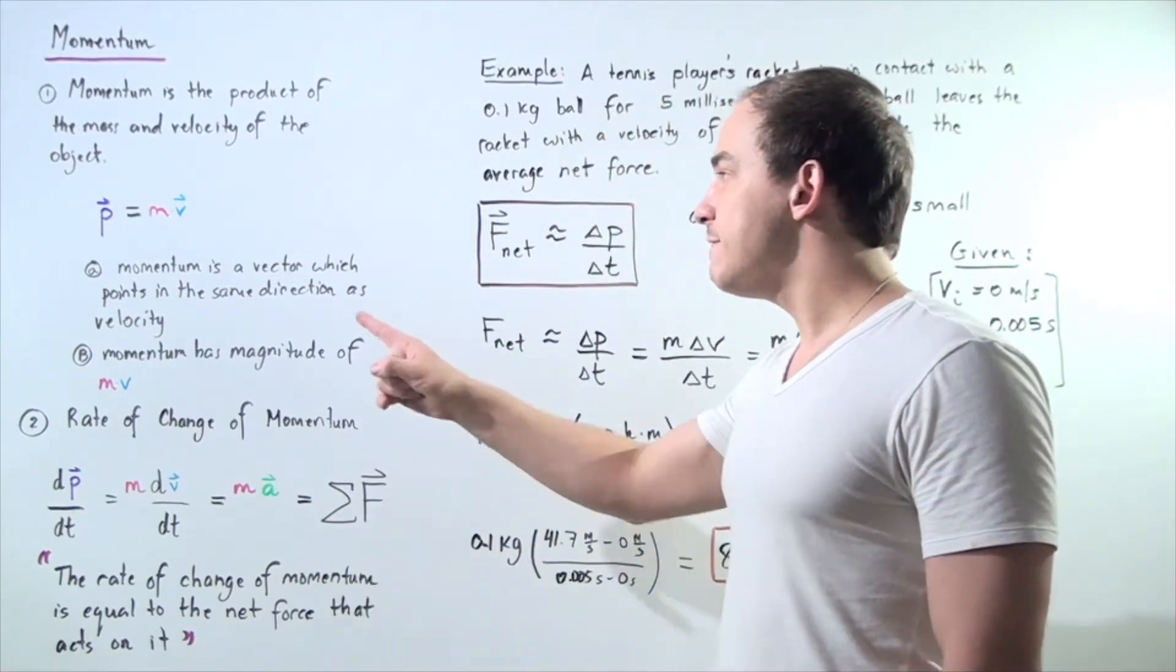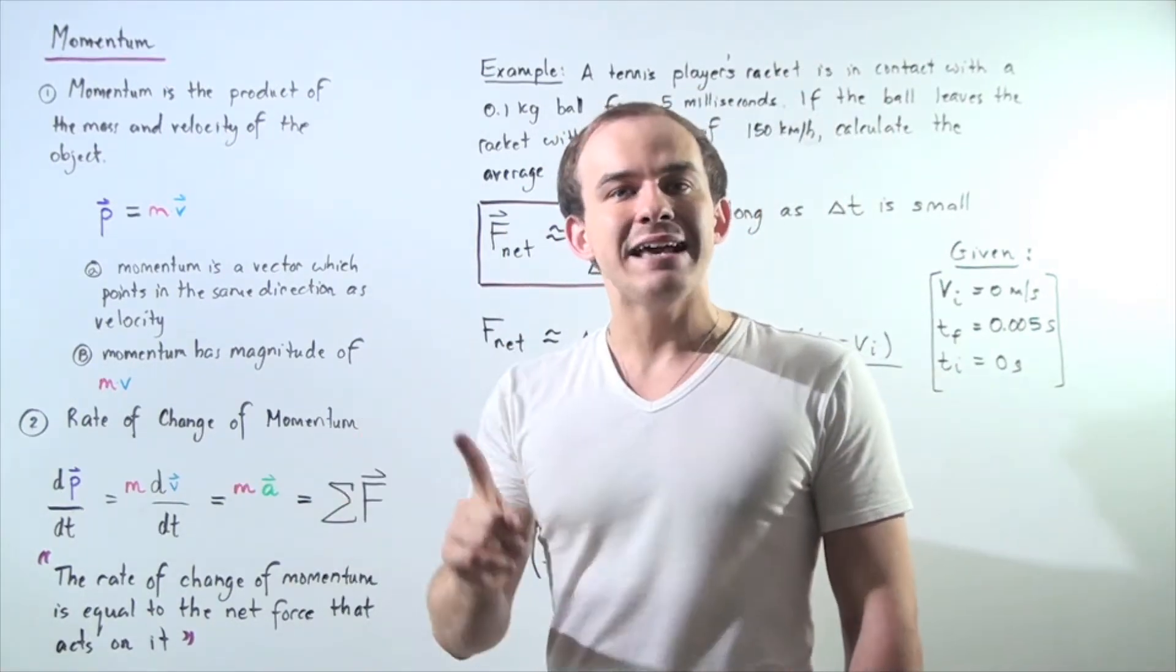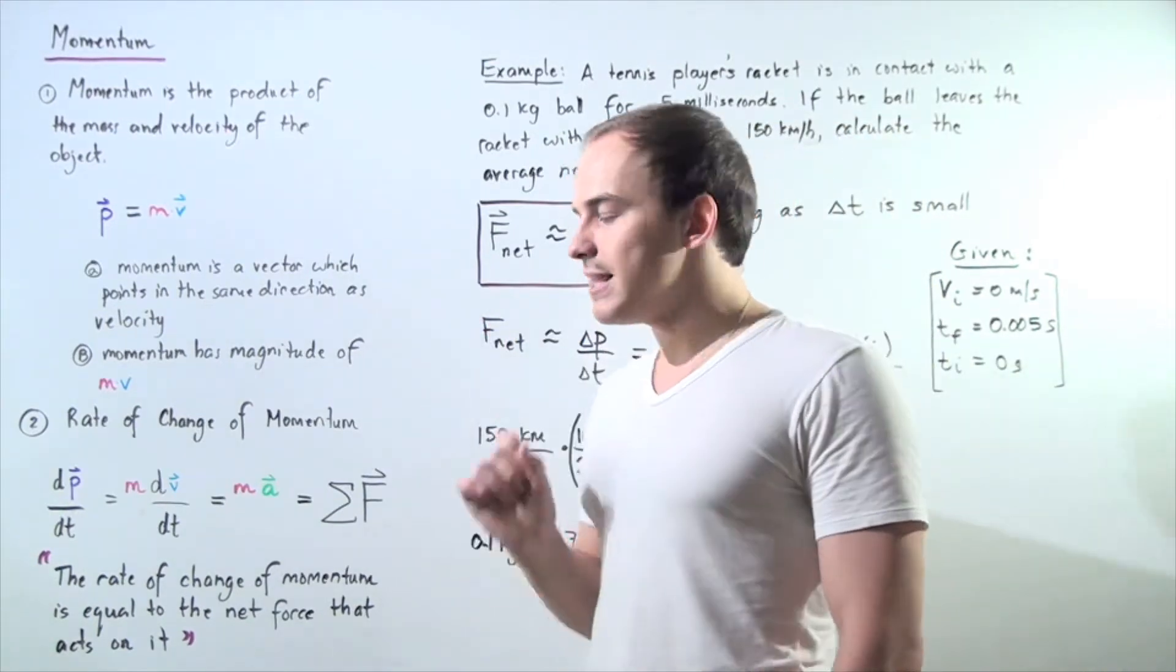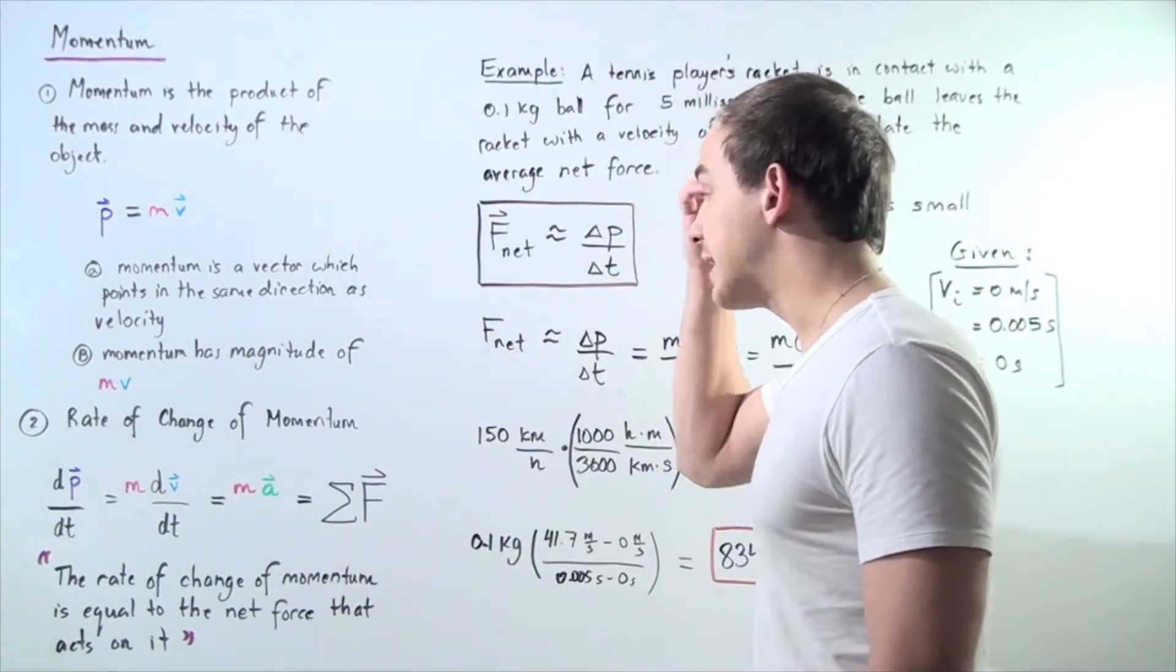Momentum is a vector which points in the same direction as velocity. So momentum vector always points in the same direction as the velocity vector.